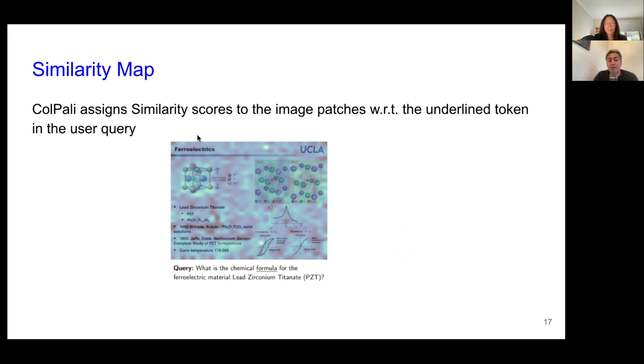So another interesting thing about this ColPali is this similarity map, because we are doing it at the word level and for each patch for user query, then we calculate the similarity between these tokens of the query and all the patches. And we find the highest, the maximum score. And then if we visualize them, then you can see which part of the image is more important, paid more attention. And this is a very interesting approach. Visualization.